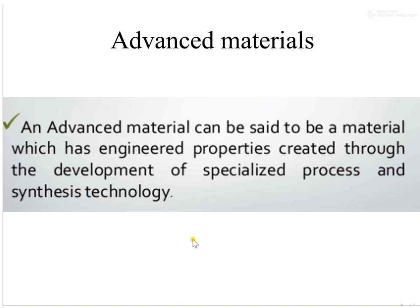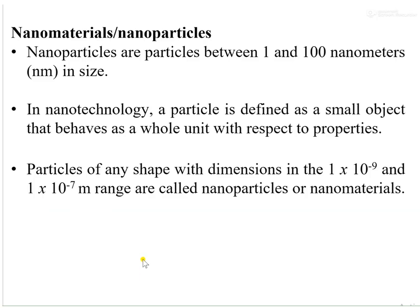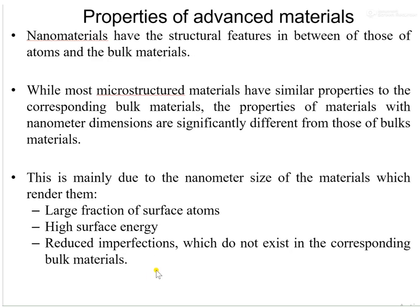Advanced materials are materials that have engineered properties created by specialized processes or synthesis methodologies. Nanomaterials are materials that have at least one dimension in the range of 1 to 100 nanometers, and their properties are different from bulk materials.